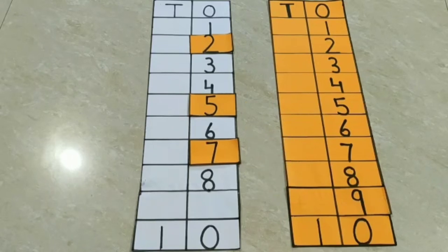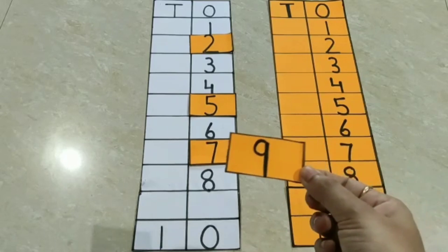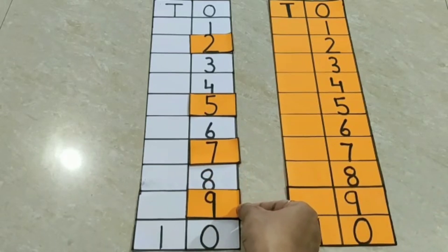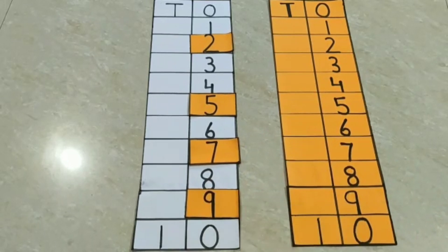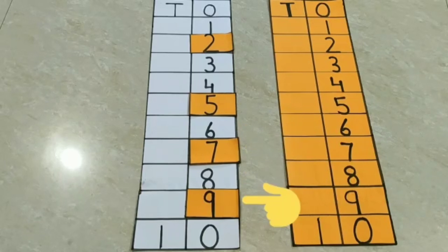Now which number is next? It's missing. Let's find out. Now we pick this card and keep it here. Tell me children. Which number is this? This is number 9. 1, 2, 3, 4, 5, 6, 7, 8, 9, 10.